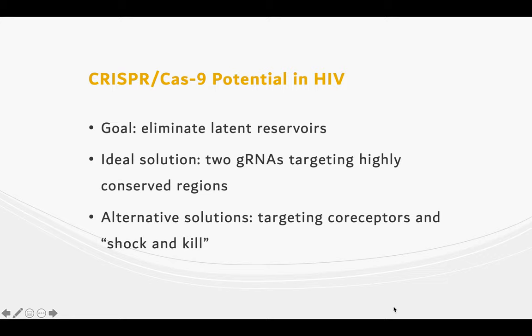As antiretroviral therapies already suppress replication and transmission, CRISPR's goal was to accomplish this as well as eliminate the latent reservoirs. It was found that CRISPR could accomplish this by targeting HIV's LTR sequences. However, viral escape proved to be an issue.